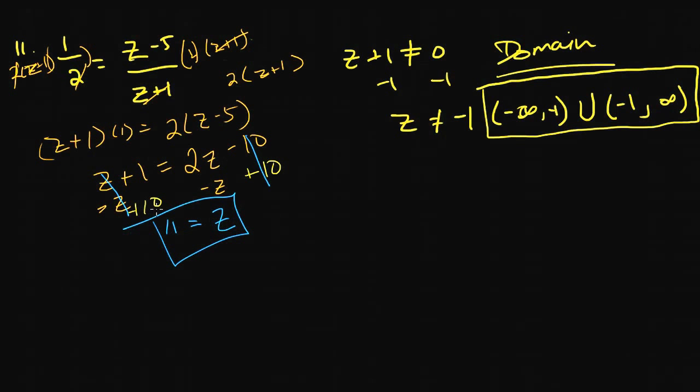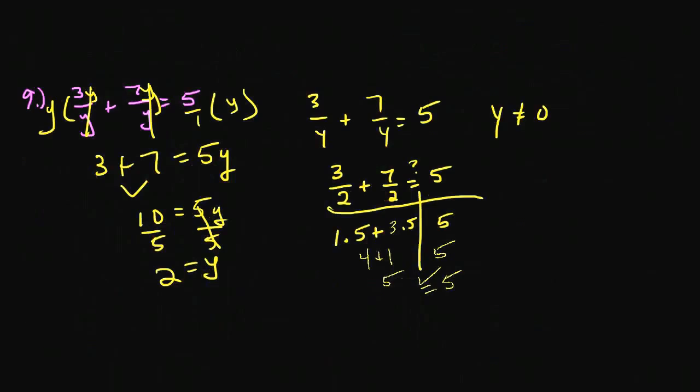Things get a little weird the way I write. So my domain restriction, does this fall within my domain restriction? Can z be equal to 11? And yes, in fact, it can because 11 is not negative 1. So we're good there. Let's try one more on this video before we move on to the next thing.